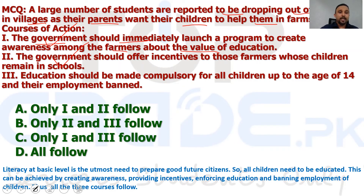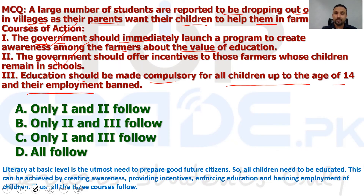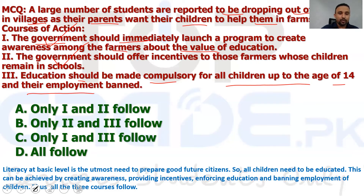The third proposed course of action is that education should be made compulsory for all children up to the age of 14. All three courses of action make a lot of sense — education is a basic right to protect. So I would say that courses one, two, and three all follow, and the best response is the option where all follow.